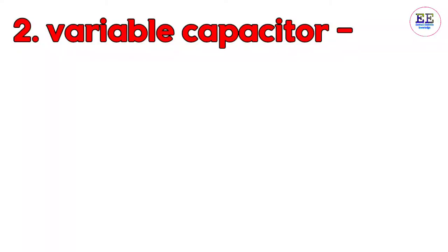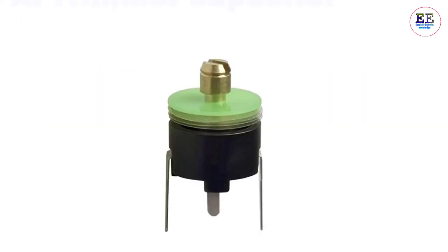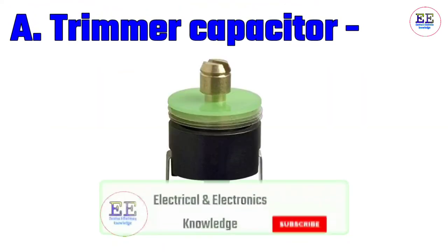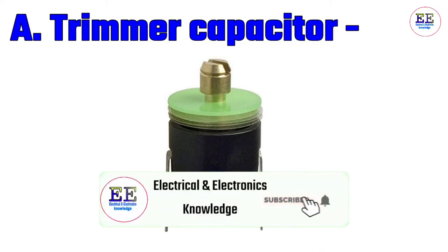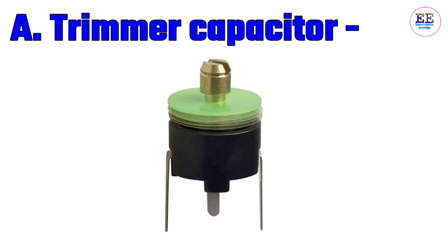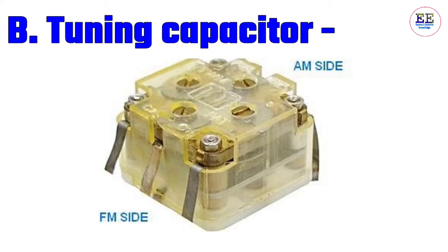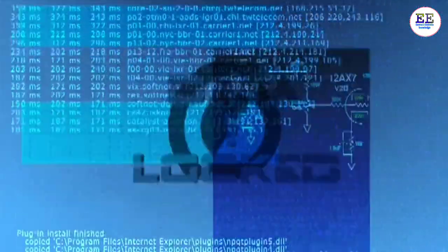A) Trimmer capacitors: trimmer capacitors are variable capacitors which serve the purpose of initial calibration of equipment during manufacturing or servicing. B) Tuning capacitors: a tuning capacitor is a variable capacitor used to vary the resonant frequency of an auxiliary circuit. I hope you understand all the types of capacitors.